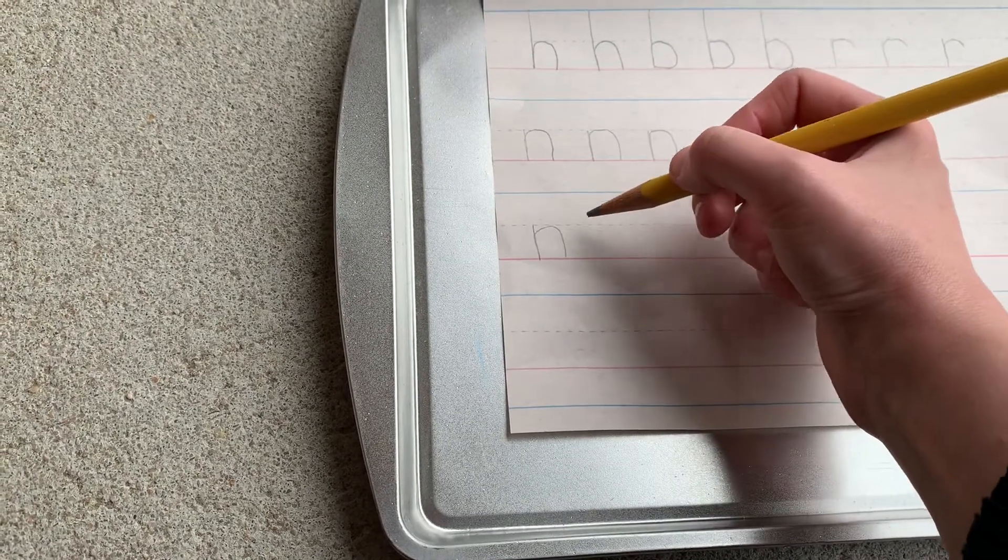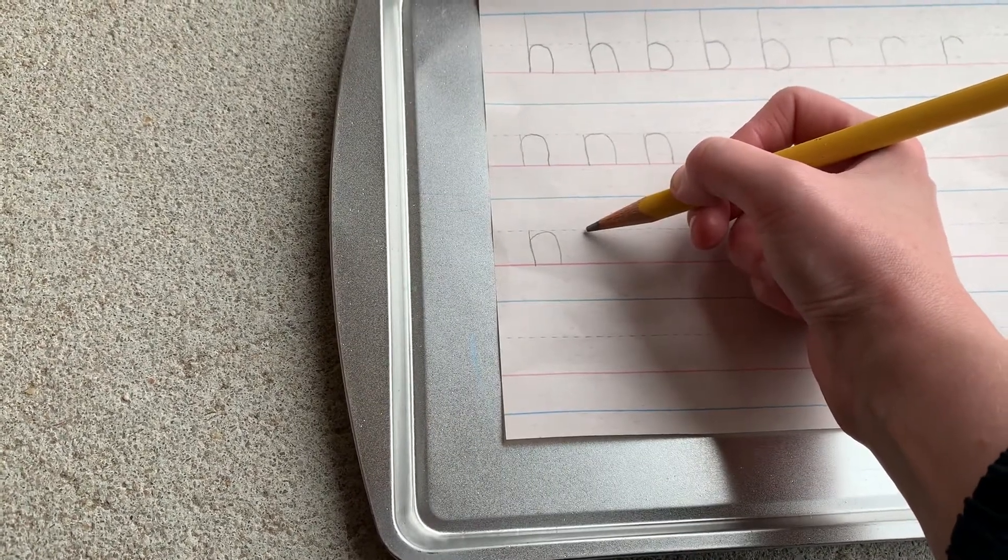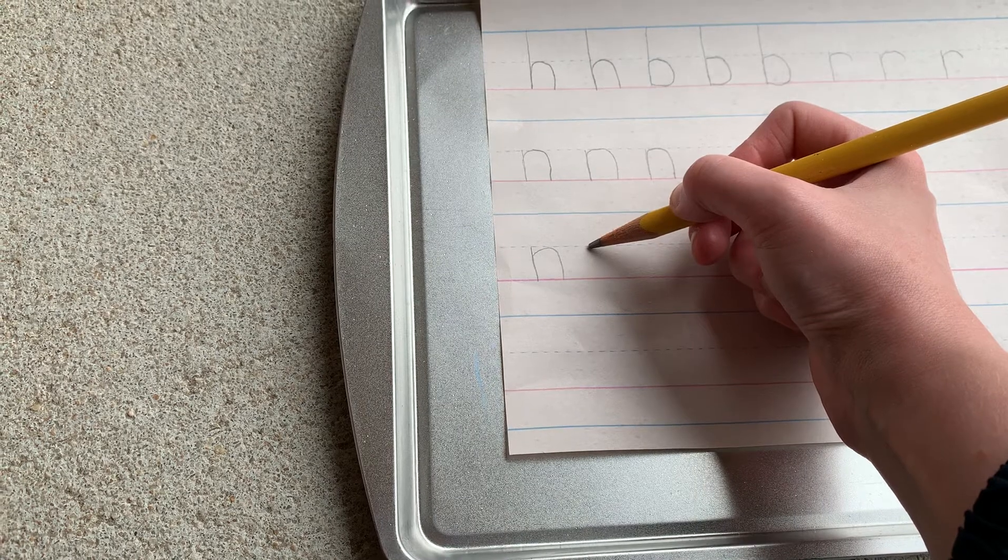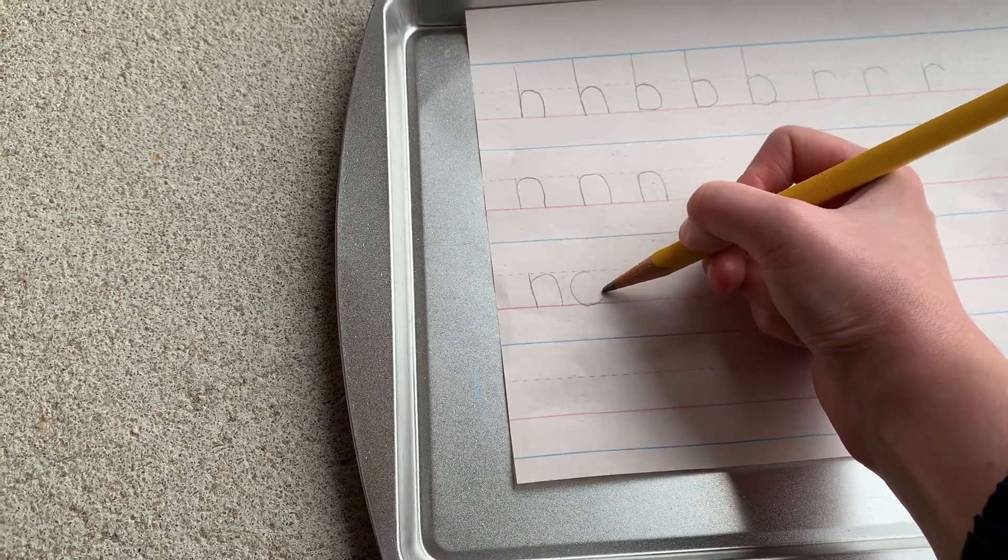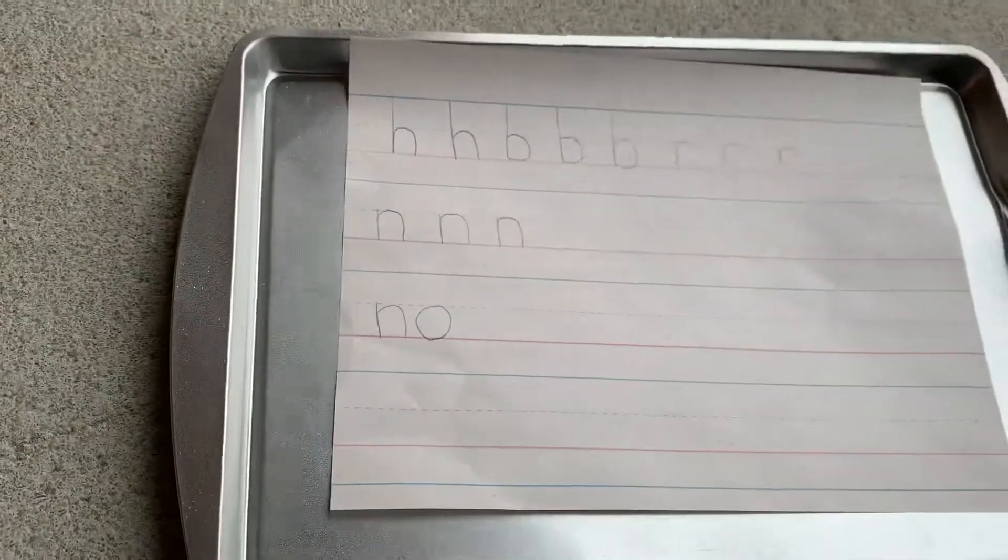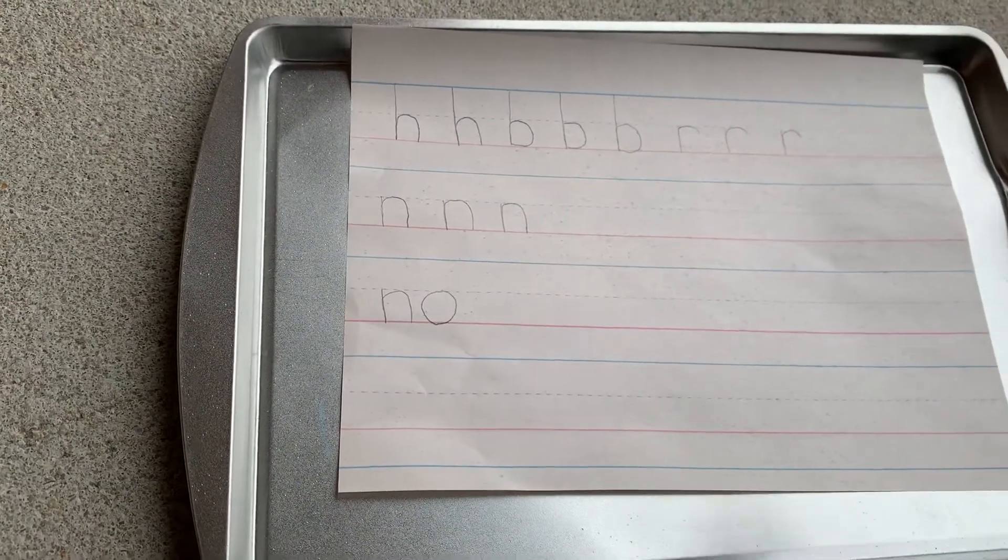And then o goes right beside it, and it's short like the n. So you're going to touch that dotted line, and all letters touch that bottom red line. Look, you just wrote the word no.